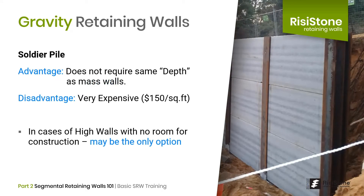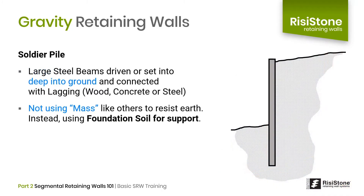In situations where there is no room to excavate back and construct a cantilever or other types of mass gravity walls, a wall can be constructed by driving piles or large steel beams into the ground and connecting them with lagging. Instead of creating a mass to resist lateral earth pressure, the piles are driven deep into the ground, utilizing the undisturbed foundation soils to support them. The piles then act as a cantilever beam, transferring earth pressure to the ground below. This type of wall is very expensive, requiring specialized pile driving equipment, massive steel beams, and wood, steel, or concrete lagging, and is used only when there is absolutely no room for excavation.